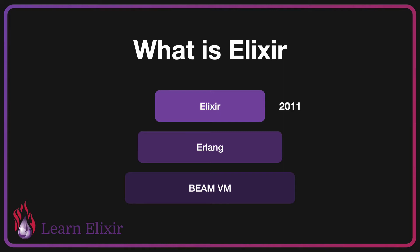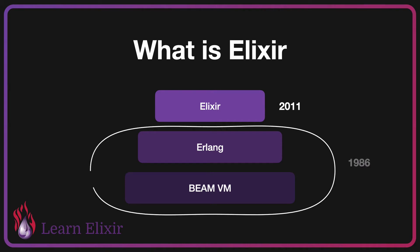Elixir is actually a fairly new language, only coming out in 2011. A lot of other languages such as Java and JavaScript have a lot longer timelines behind them, and thus make it a bit easier of a choice to use — because after all, it's battle tested, right? Well, this is actually where Erlang and the BeamVM come in.